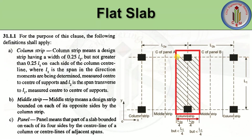The column strip width of 0.25·l2a shall not be greater than l1/4, that is 0.25·l1, on each side of the column center line. l1 is the span in the direction the moments are being determined, measured center to center of supports, and l2 is the span transverse to l1, measured center to center of supports.